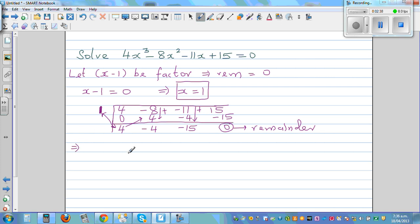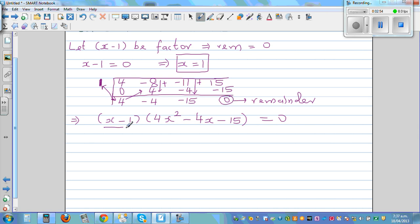So this implies this equation changes to x minus 1 times 4x squared minus 4x minus 15 is equal to 0. Now you can set this equal to 0 and this equal to 0. x minus 1 equal to 0, and 4x squared minus 4x minus 15 is equal to 0.